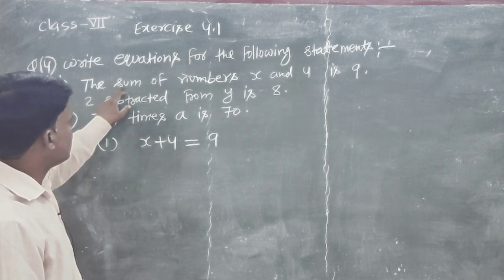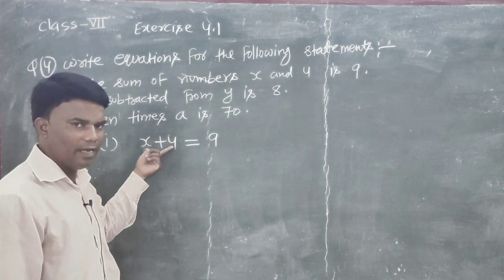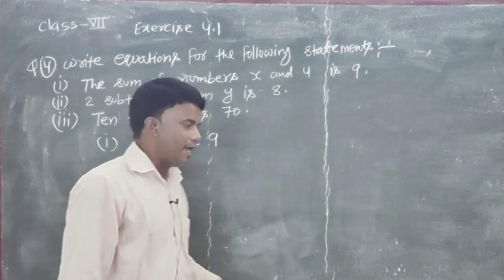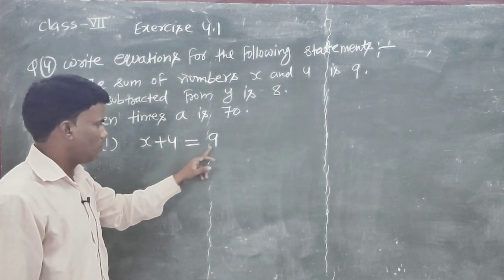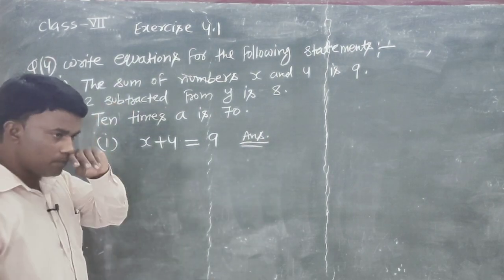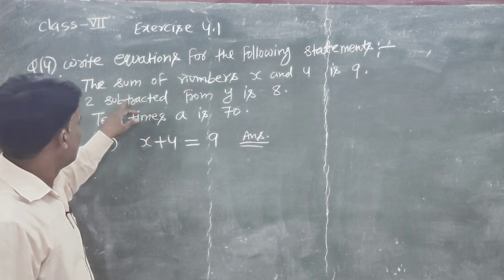Again, the sum of numbers x and 4, x and 4 represent addition. Sum comes here, plus. So the result is 9. x plus 4 is equal to 9. This equation is converted according to the language.